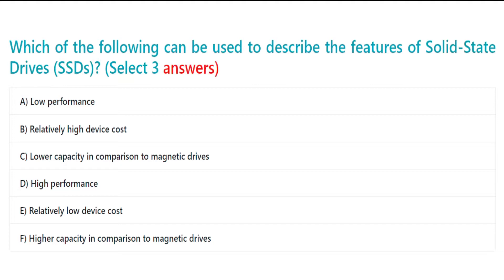Select three answers. A. Low performance. B. Relatively high device cost. C. Lower capacity in comparison to magnetic drives. D. High performance. E. Relatively low device cost. F. Higher capacity in comparison to magnetic drives.